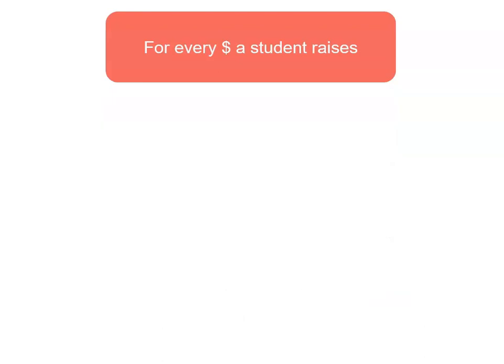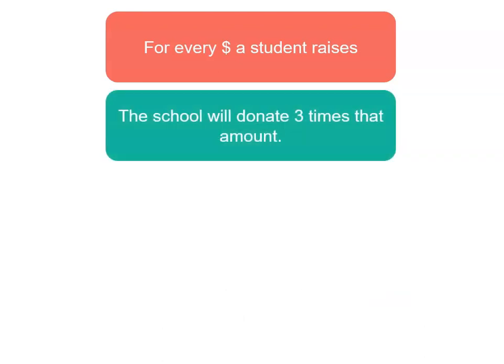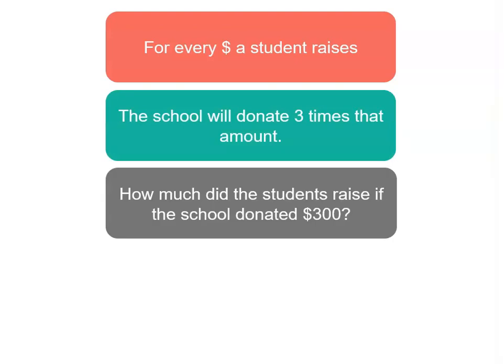But this time we don't know how much the student raised. We do know though that the school donated three hundred dollars. Remember for every dollar the student raised, let's use an empty box. We multiply that by three to get the amount the school donates, which is three hundred dollars.